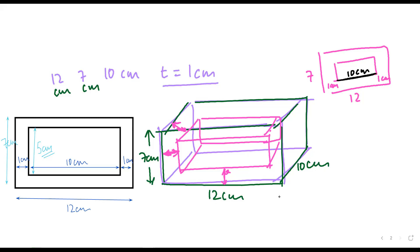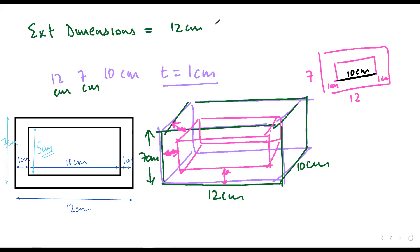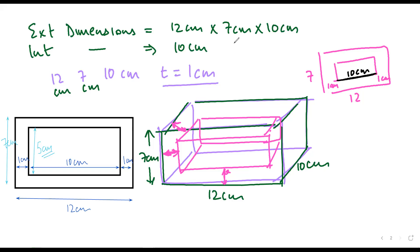This is a bit of a complicated question. If the external dimensions of the cuboid are 12 centimeter by 7 centimeter by 10 centimeter, then the internal dimensions would be 10 centimeter by 5 centimeter by 8 centimeter.